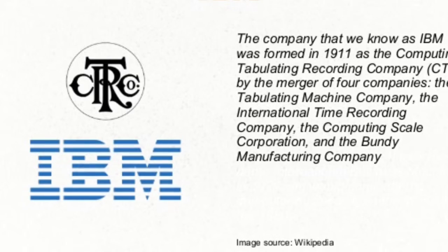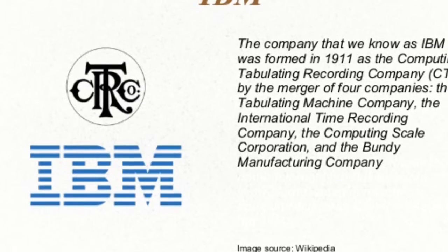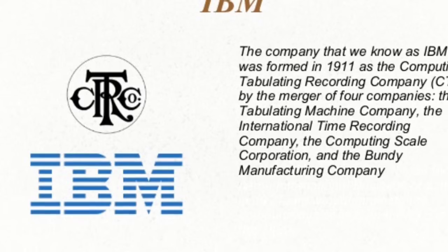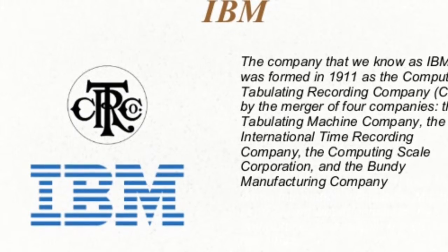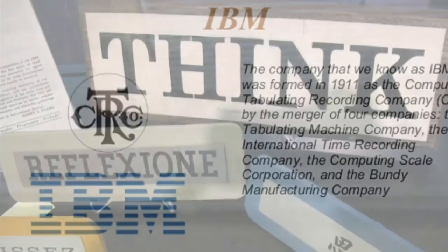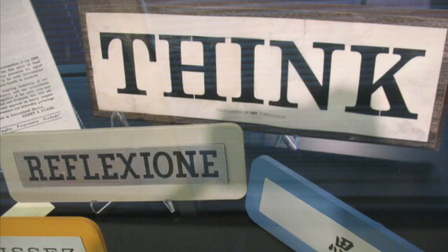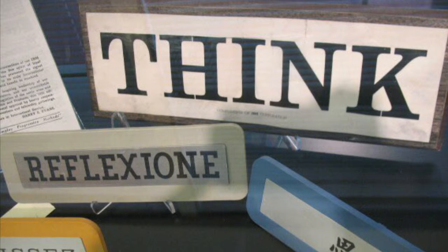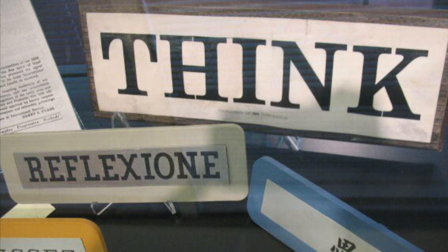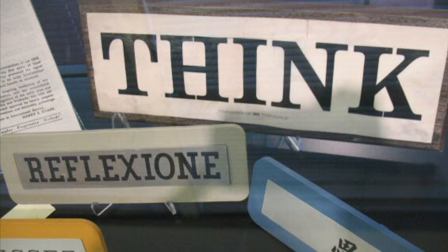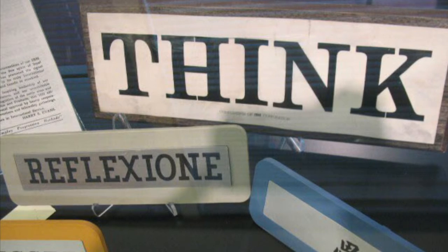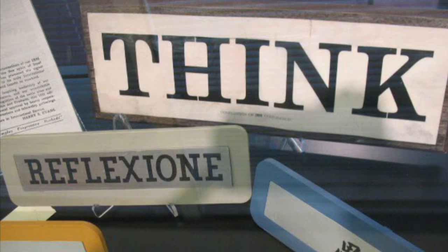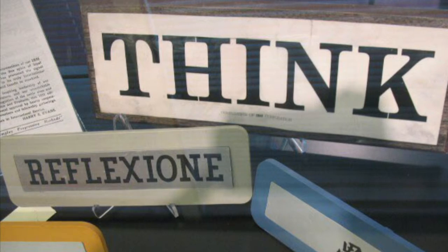We're going to be starting in 1911 with the formation of IBM. The first thing they became notable for after 1911 was their Think slogan. The slogan was created by soon-to-be CEO Thomas J. Watson during a sales meeting, in which he said, 'The trouble with every one of us is that we don't think enough. We don't get paid for working with our feet, we get paid for working with our heads.' After the speech, Watson wrote Think on an easel.